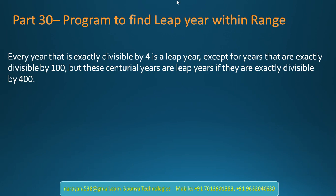What is a leap year? A leap year is the year that is exactly divisible by 4, except for years that are exactly divisible by 100. But those centennial years are leap years if they are exactly divisible by 400.